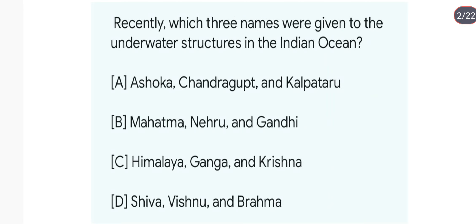Recently, which three names were given to the underwater structure in the Indian Ocean? The names proposed are Ashoka, Chandragupta, and Kalpataru.